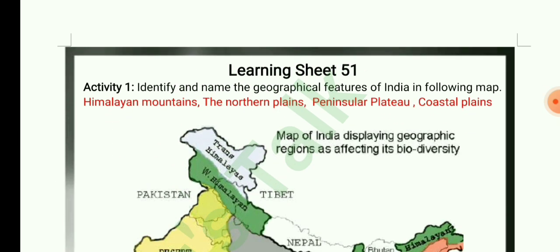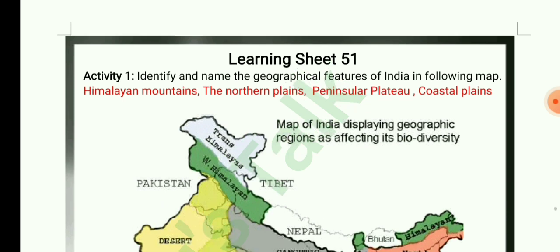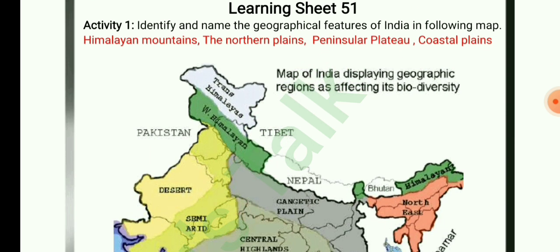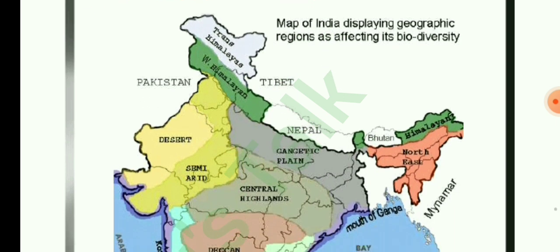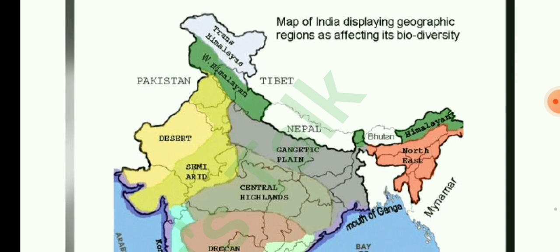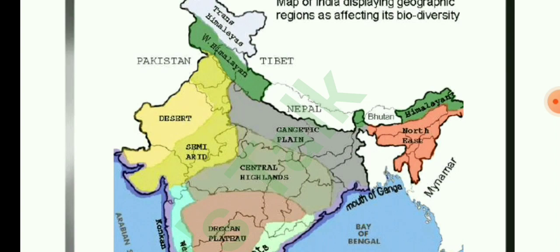The next question is Learning Sheet 51: identify and name the geographical features of India in the following map. The geographical features of India are Himalaya Mountains, the Northern Plains, Peninsular Plateau, and Coastal Plains. This is a map of India displaying geographic regions, which affects its biodiversity.